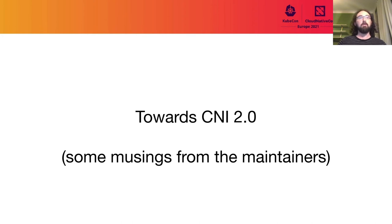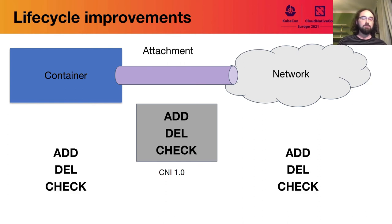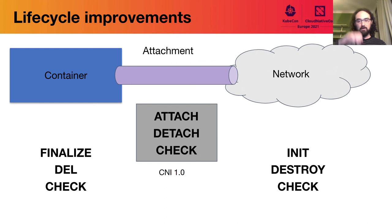With about 10 minutes left, let's think about what CNI 2.0 might look like. The first area is potential lifecycle improvements. Currently you can add, delete, and check an attachment — that's all you can do. What if you could apply the same verbs to all three logical components within CNI? What if you could manage networks the same way you manage attachments? Let's come up with better verbs: we have a similar lifecycle for networks and containers as we have for attachments, just renamed to make more sense.